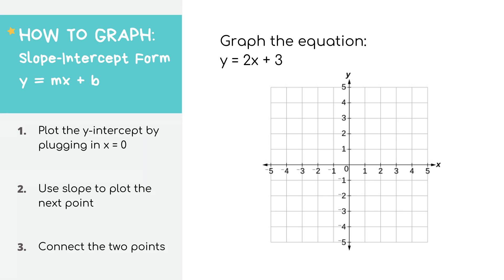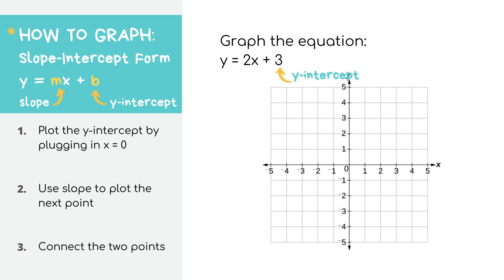To graph from slope-intercept form, the equation is written in the y equals mx plus b format. In slope-intercept form, you can easily find the slope, which is represented by the letter m. In our example, m equals two, so we know our slope equals two. You can also easily find the y-intercept, which is represented by the letter b. In our example, b equals three, so that's our y-intercept. Having your equation in slope-intercept form makes it pretty simple to draw the graph.